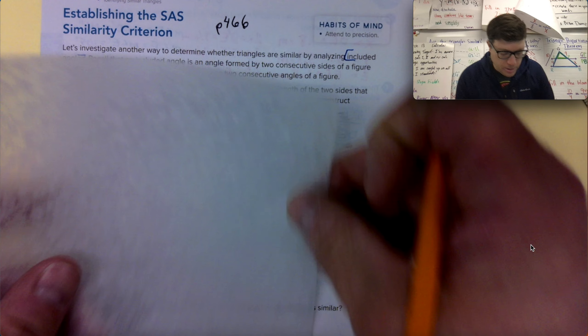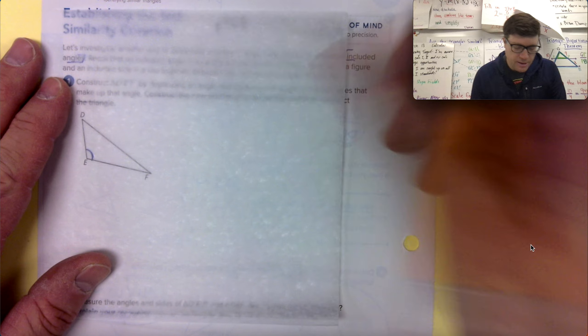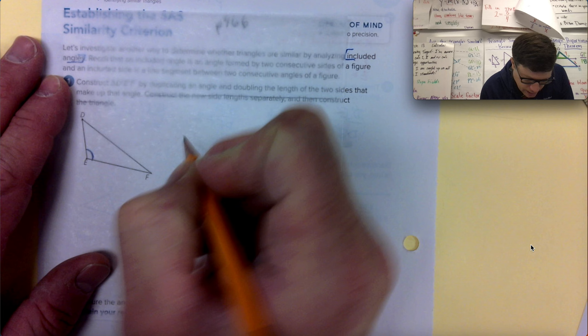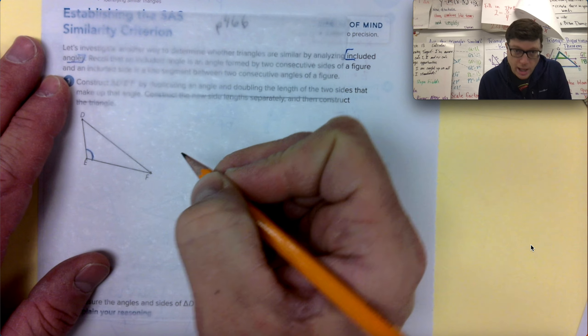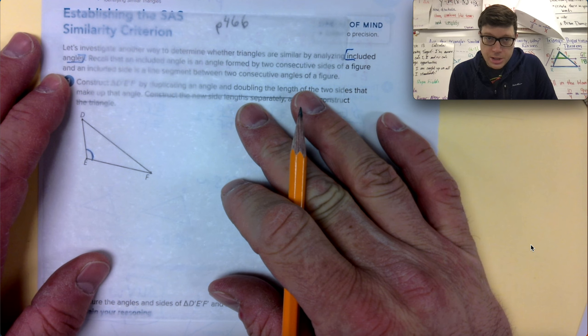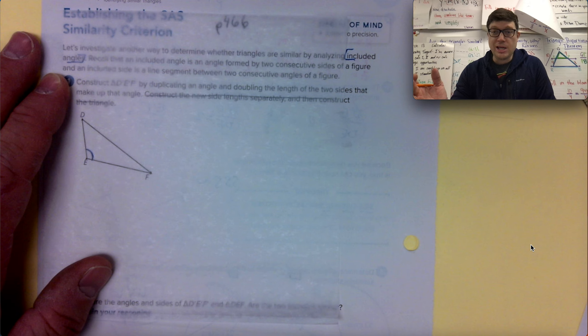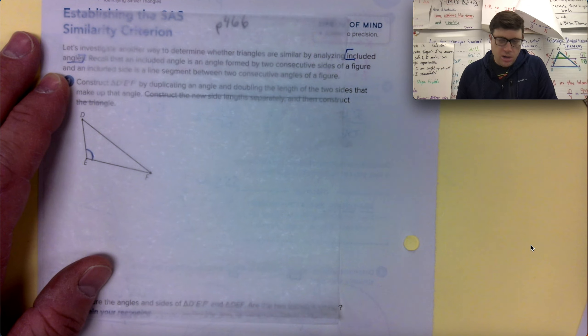Get a pencil, tracing paper, and let's trace angle E. In fact, be very careful that we're going to trace ED and EF as well. The only side I'm not interested in tracing is DF. Also, I picked angle E. Sorry, I'm talking while I should have been working. I picked angle E because it's a big enough angle. Angle D and angle F, they're so little.